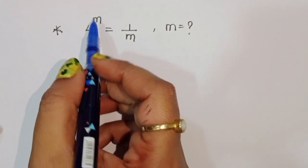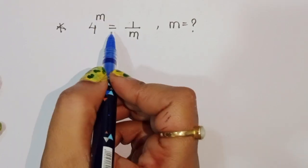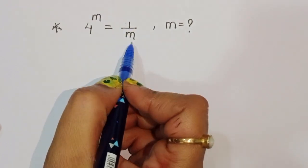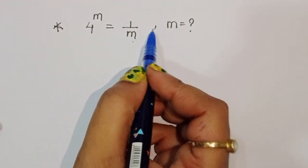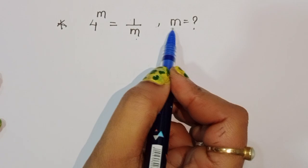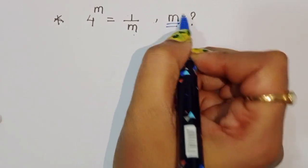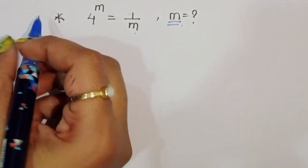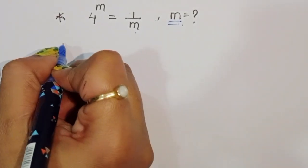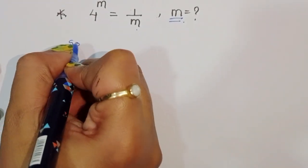The question is: given 4 power m is equal to 1 upon m, we have to find out the value of m. Let's see the solution.